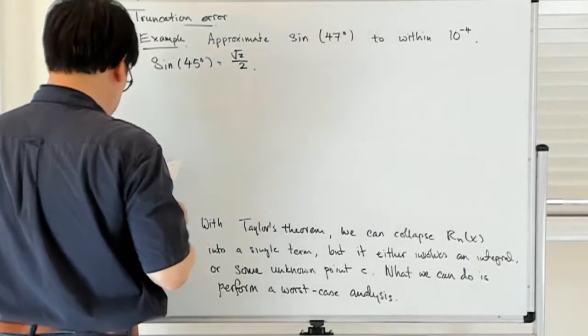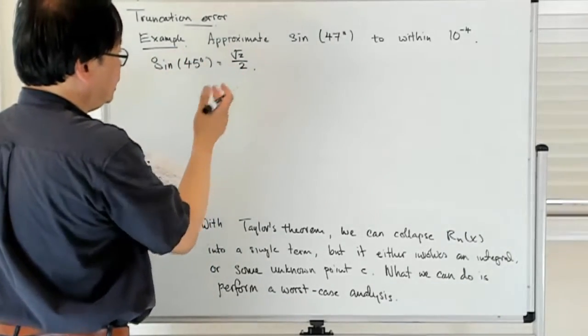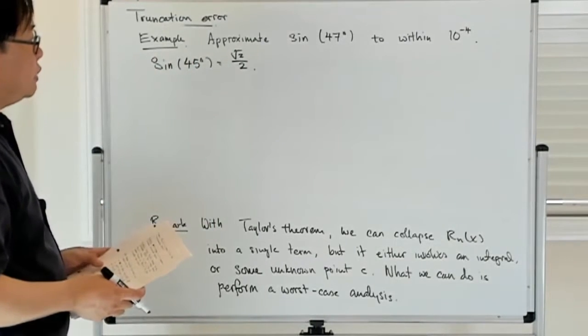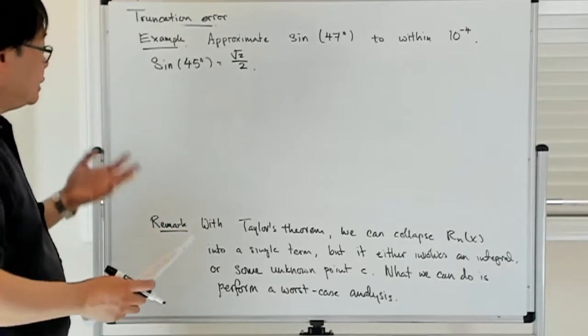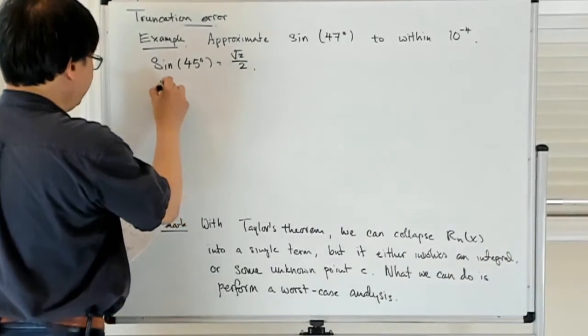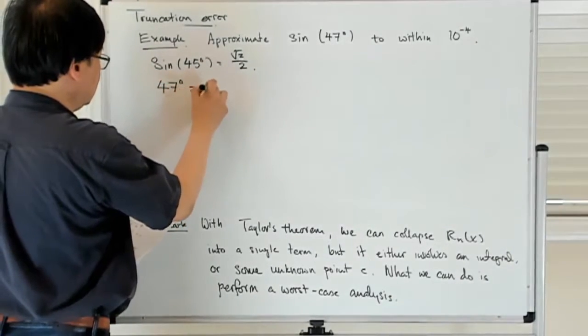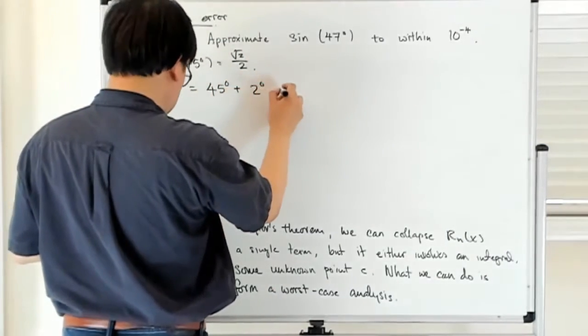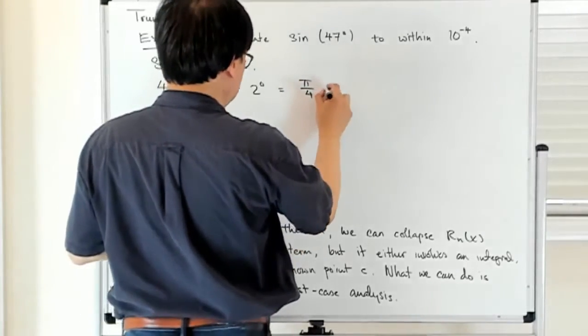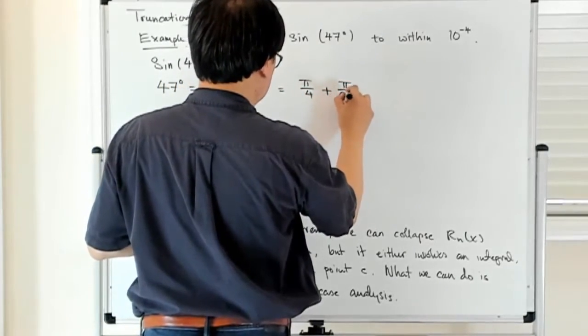So we know that sine of 45 degrees is root 2 over 2. And you always want to, when you're working in sine and calculus, express the angle in radians. So what I'm going to do is write 47 degrees as 45 degrees plus 2 degrees, but that's equal to π over 4 in radians plus π over 90.